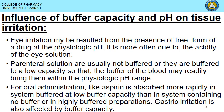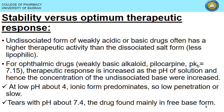Aspirin (acetylsalicylic acid) is found to be absorbed more rapidly in systems buffered at low buffer capacity compared to systems with no buffer or highly buffered preparations. Gastric irritation is also affected by buffer capacity. Aspirin, being an acid, must be in the un-ionized form for absorption. However, prolonged contact of the un-ionized form with tissue can cause irritation, so a balance must be maintained.